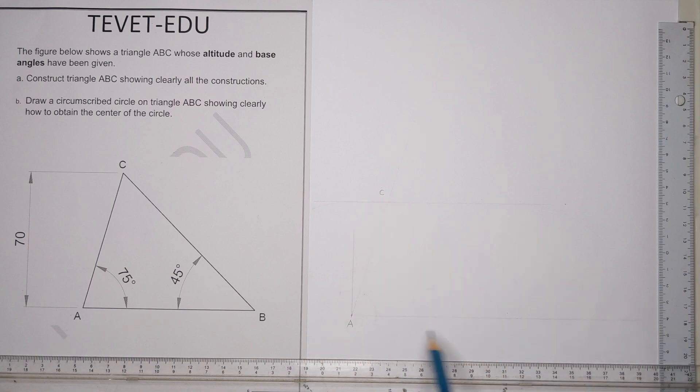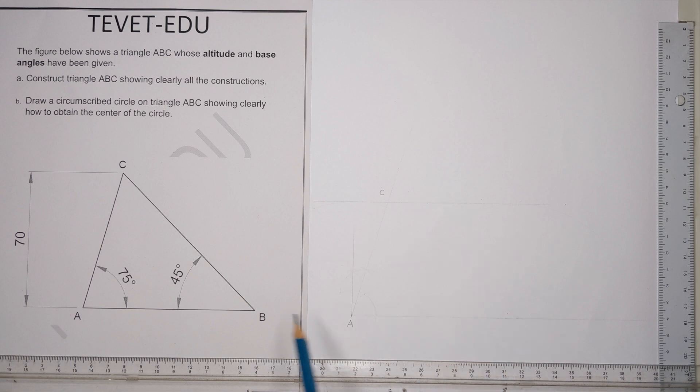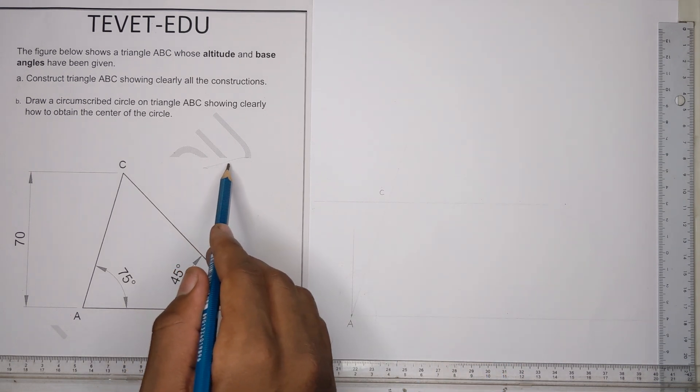Since this line and this line are parallel, when you draw a line at angle 45 on this side it will meet with this line at point B at angle 45 from this side - like angles in a Z.